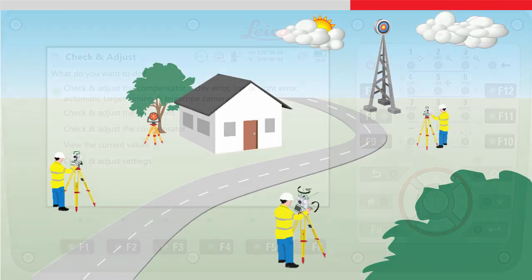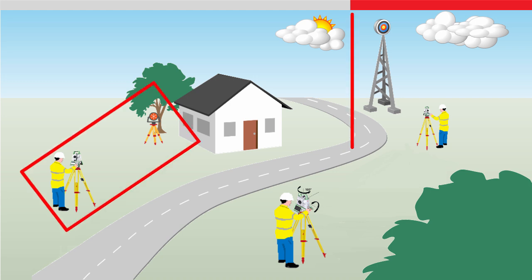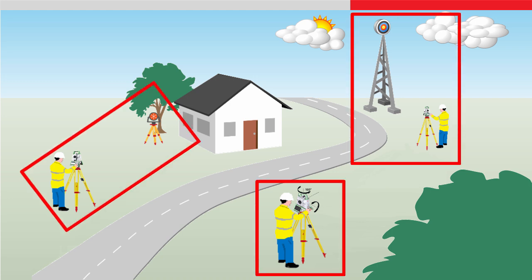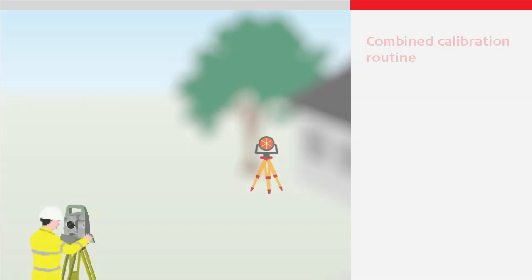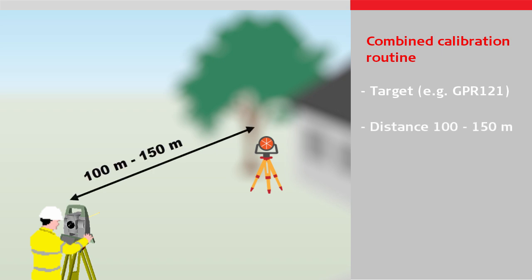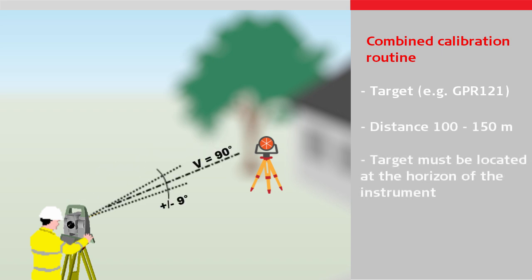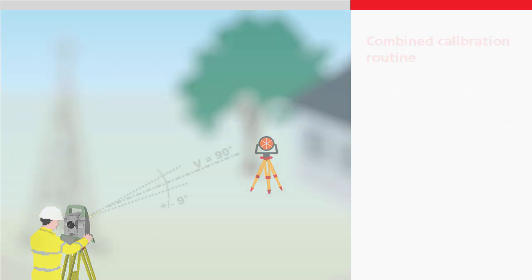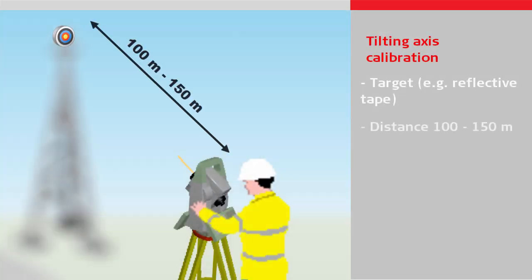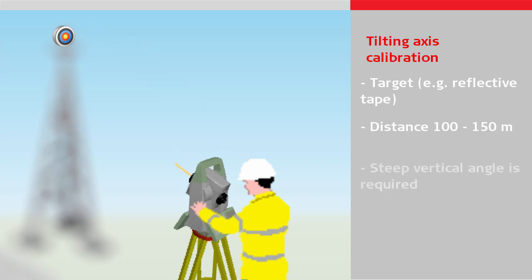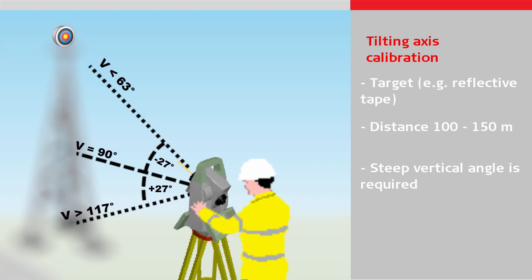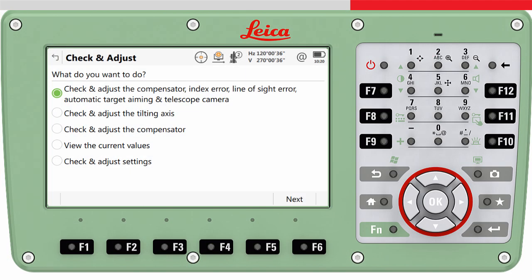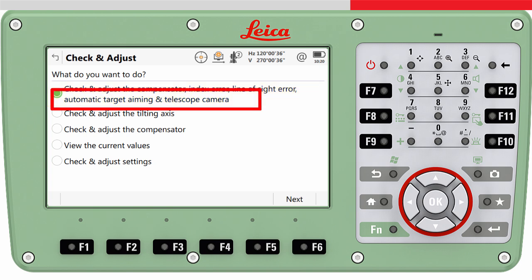All three routines require different setups and different targets. The combined calibration routine requires a target at a distance of 100 to 150 meters, positioned less than plus or minus 9 degrees from the horizontal plane. The second routine requires a target at a similar distance, however it must be positioned at least 27 degrees above or below the horizontal plane. The first combined calibration routine can also calibrate the automatic target aiming and the crosshair of the telescope camera if the total station is equipped with those features.